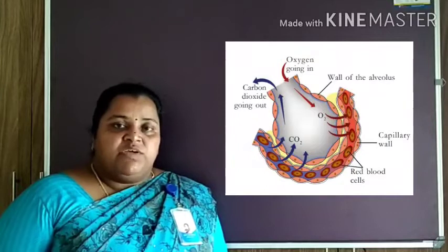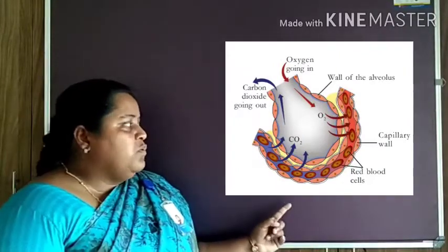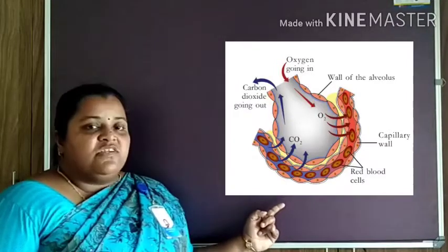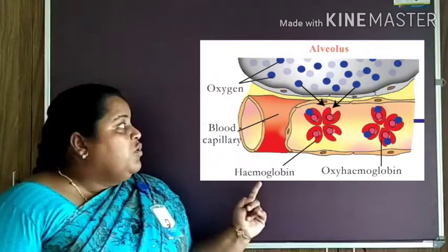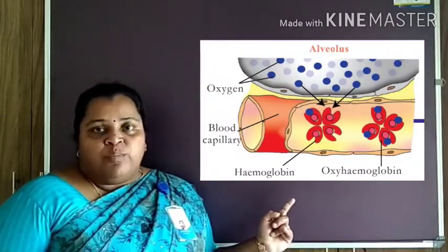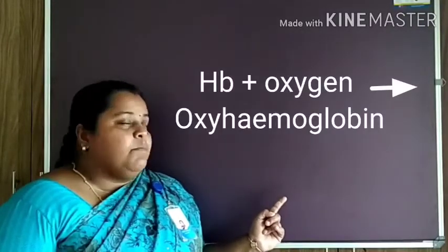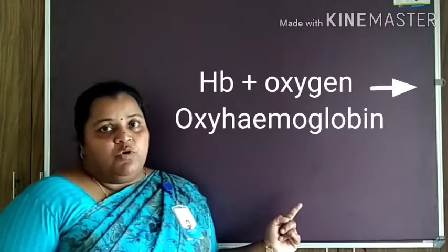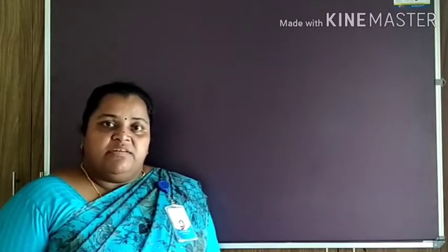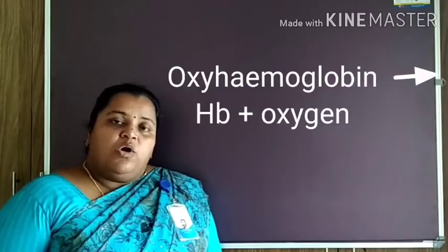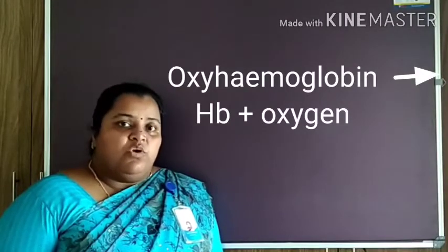Now we will see how far the structure of hemoglobin is efficient for transportation of respiratory gases. In the previous session we discussed exchange of respiratory gases between alveoli and blood capillaries. By simple diffusion, oxygen enters into the blood capillaries where hemoglobin is present. Hemoglobin combines with oxygen to form a compound known as oxyhemoglobin, which is an unstable compound. It is carried through the blood vessels and reaches near the cells.